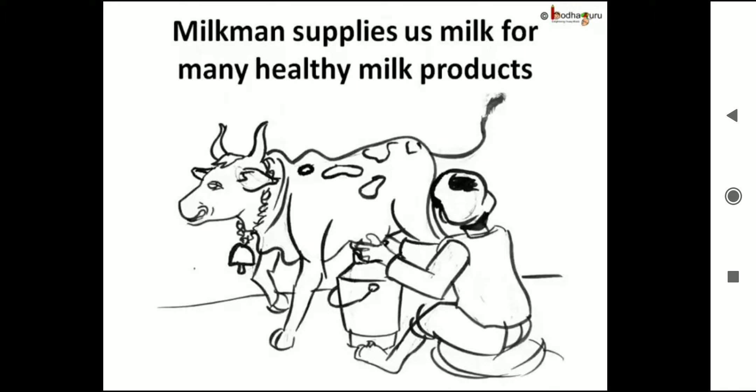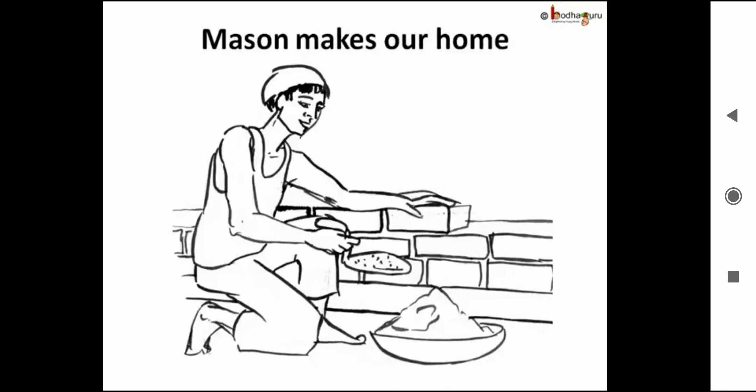The milkman supplies milk for sweets, curd, butter, and ice cream. So if you love sweet ice cream, you must be grateful to our milkman. Who made the house for you? It was a mason. The mason makes pucca houses from brick, cement, and stone.